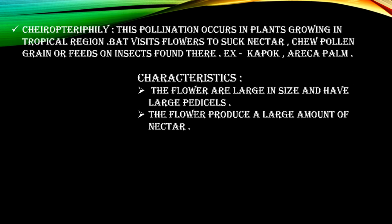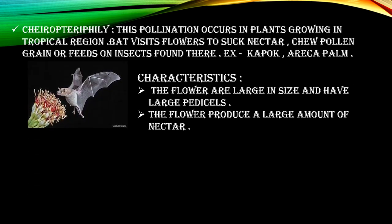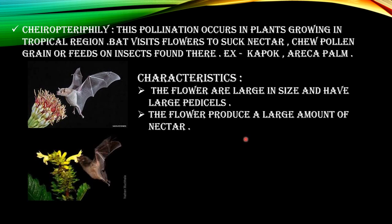The next type of pollination is carried by bats, which is called chiropterophily. These plants are mostly found in tropical regions. Bats can suck the nectar, chew the pollen, and feed on insects found on these flowers. These flowers are large with large pedicels and produce a large amount of nectar.